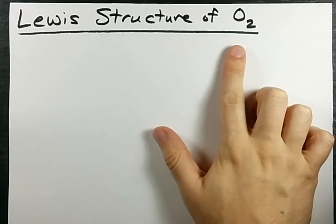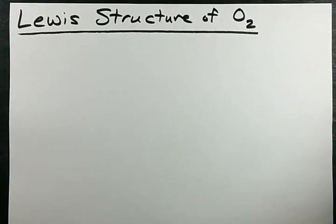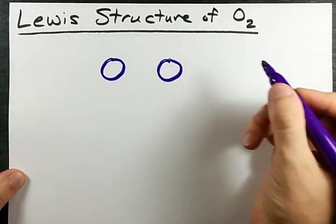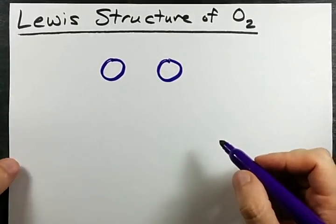Lewis structure for O2, oxygen gas. It's simply two oxygens bonded together. But how are they bonded together is the question.